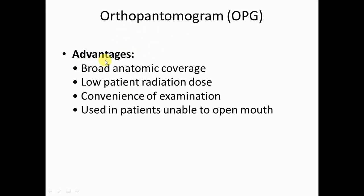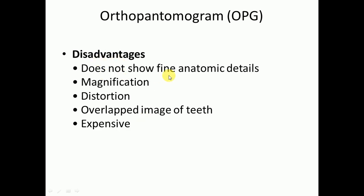Disadvantages: it does not show fine anatomical details — for fine anatomical details we will need a periapical x-ray or bite wing x-ray. There may be problems of magnification and distortion — one side may look smaller than the other. There can also be overlapping of teeth as well as anatomic structures, and it may be a bit expensive.